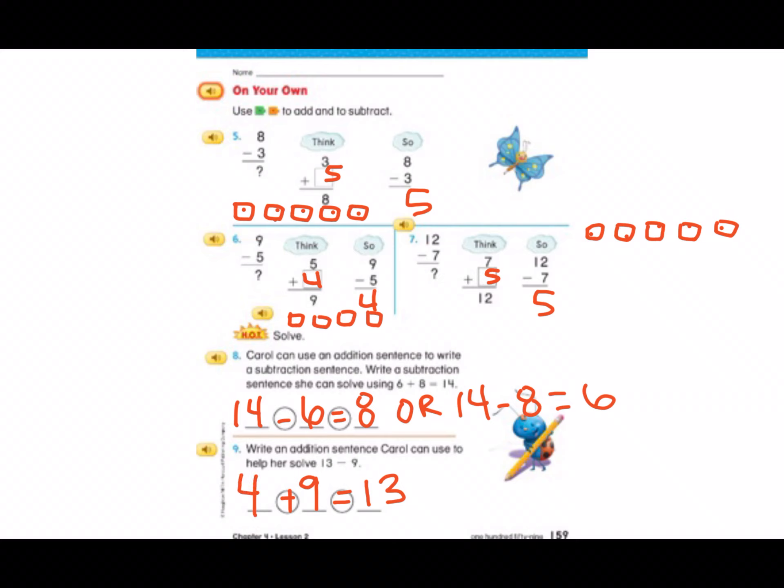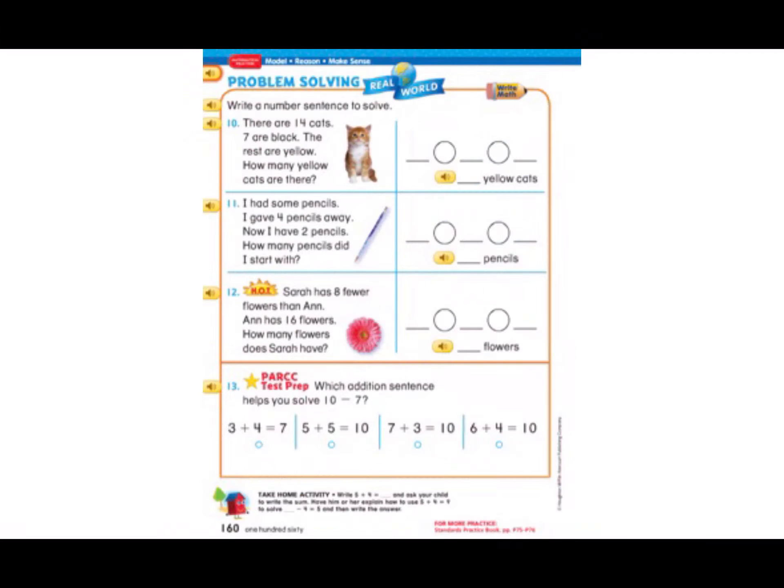Let's look at our last page. There are 14 cats. 7 are black. The rest are yellow. How many yellow cats are there? So I need to write 14 minus 7 equals. What's my doubles fact for the number 7? Right, 7 plus 7 equals 14. So how many yellow cats are there? Seven.